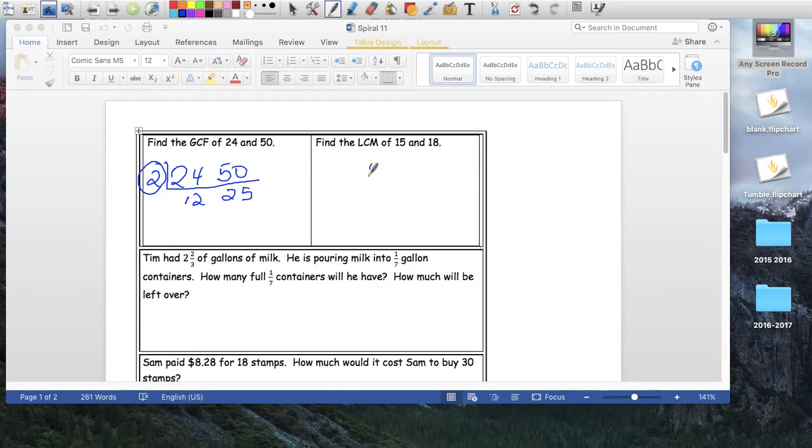LCM of 15 and 18. So again, ladder method. Can I use 2? No. 3? Yes I can. 3 goes into 15 five times, 3 goes into 18 six times. So the ladder method here, you're going to make a little L. For LCM, remember we're going to multiply 3 times 5 times 6, so the LCM here is the product of 3, 5, and 6. Let's see, 6 times 5 is 30, 30 times 3 is 90. First number that 15 and 18 can go in is 90, that's the smallest number.